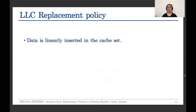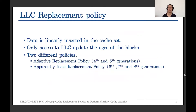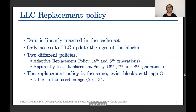As a result, we were able to make the following observations about the replacement policy in the processors. First, data is linearly inserted in the cache set. Second, only accesses to the last-level L3 cache update the ages of those blocks. It seems there are two different replacement policies: fourth and fifth generation seem to implement an adaptive replacement policy, whereas sixth, seventh, and eighth generations apparently have a fixed replacement policy. But indeed, the replacement policy is just the same in all cases — they evict the block whose h is equal to three. They only differ in the insertion h of these blocks.